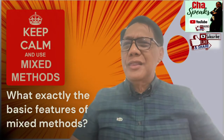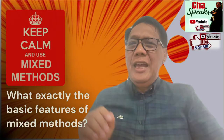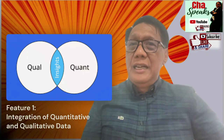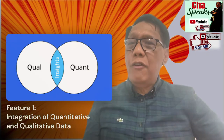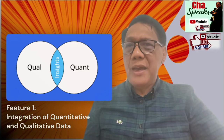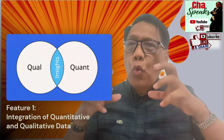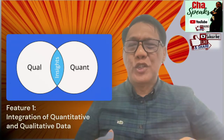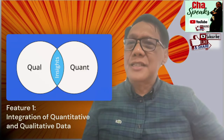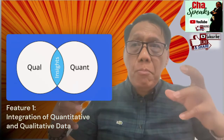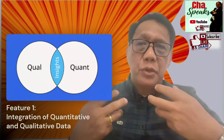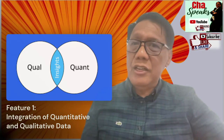So what exactly are the basic features of mixed methods? Let's break it down into three components. First, Integration of Quantitative and Qualitative Research. One of the fundamental features of mixed methods is the integration of both quantitative and qualitative research. This approach allows researchers to gain a comprehensive understanding of the research topic by combining numerical data with in-depth insights from narratives, interviews, or focus groups.